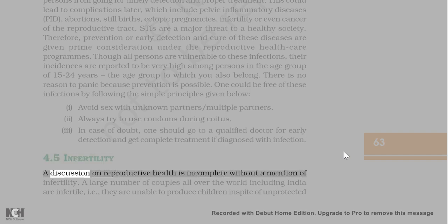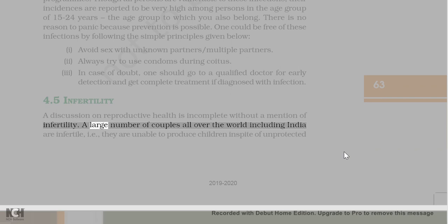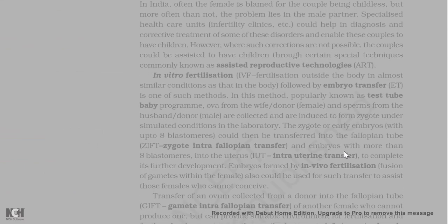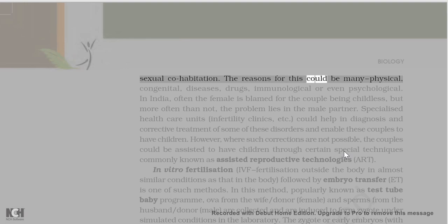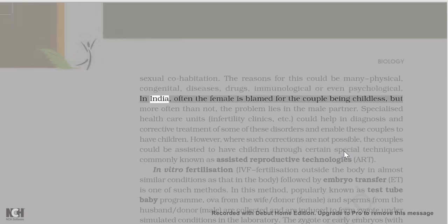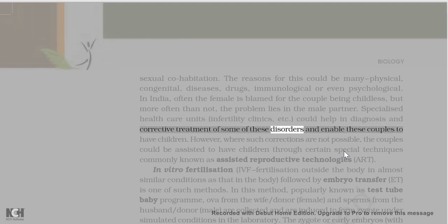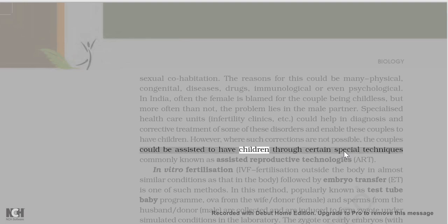A large number of couples worldwide, including in India, are infertile — unable to produce children even after unprotected sexual cohabitation. The reasons could be physical, congenital, diseases, drugs, immunological, or even psychological. In India, the female is often blamed for childlessness, but more often the problem lies in the male partner. Infertility clinics could help diagnose and correct some of these disorders. Where corrections are not possible, couples can be assisted through assisted reproductive technologies (ART).